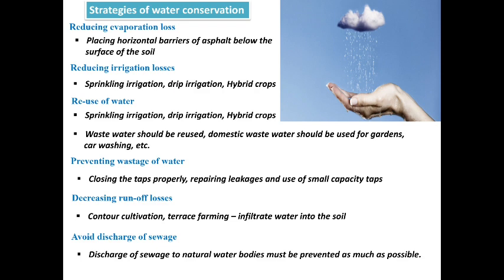The second strategy is reducing irrigation losses. Water losses during irrigation can be reduced by using sprinkling irrigation, drip irrigation, and by the use of hybrid crops. By using sprinkling and drip irrigation we can conserve water up to 30 to 40 percent. Hybrid crops also require less amount of water.